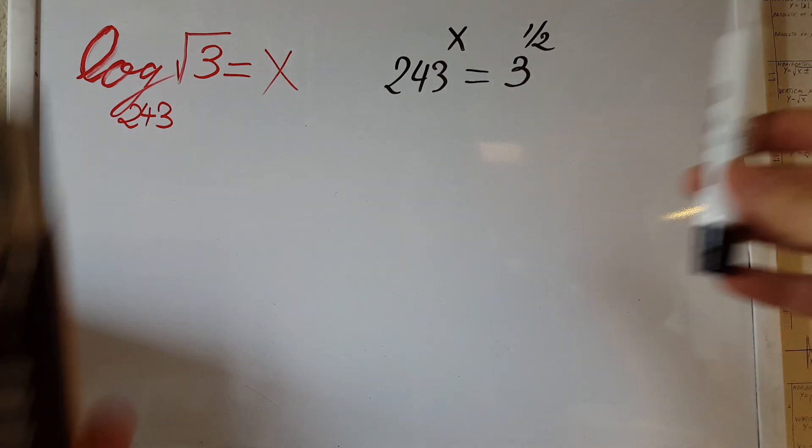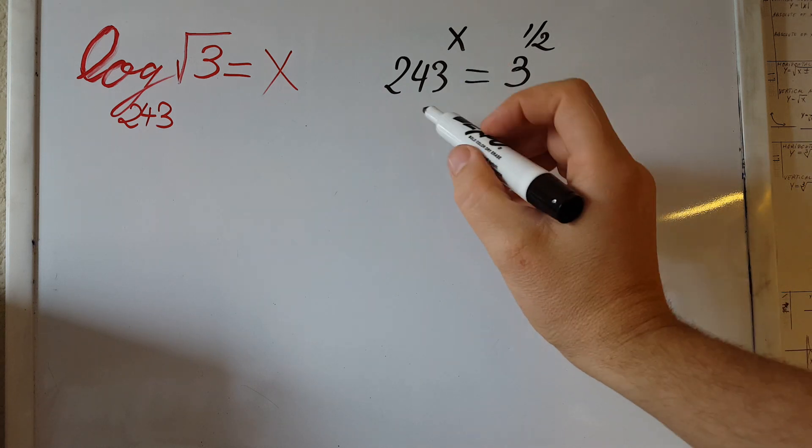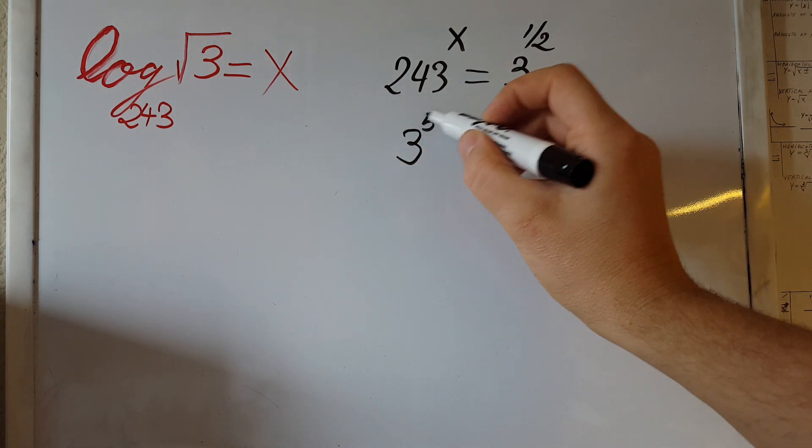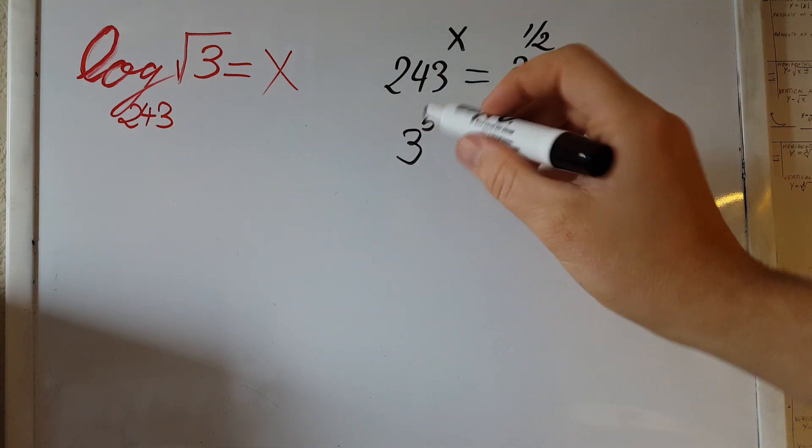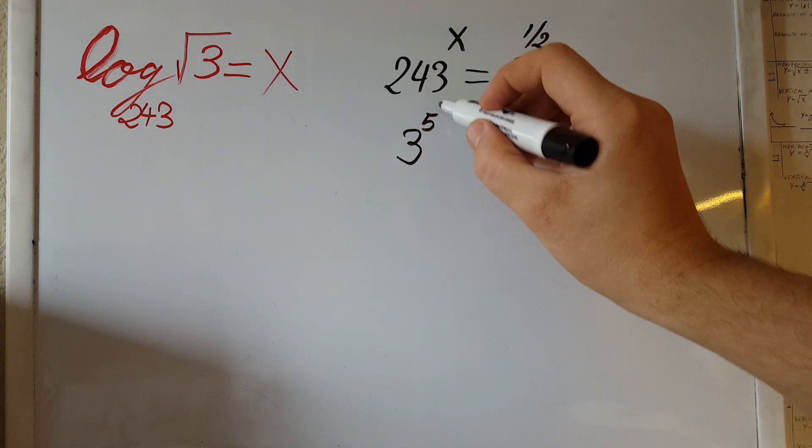With a calculator, you will find that 243 is actually 3 to the power of 5. So if we raise 3 to the power of 5, we're going to have 243.